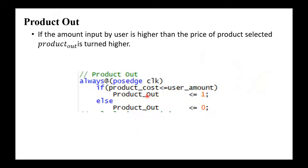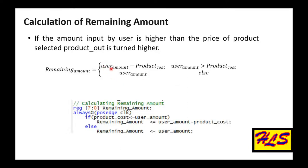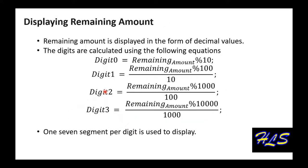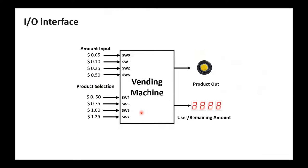The product is output if the product cost is less than the user amount. Once the product is out, we display the remaining amount, which is the user amount minus the product cost. If the user amount is not greater than the product cost, we simply display the user amount. The remaining amount is then displayed as four digits using the remainders of that number on the 7-segment displays.